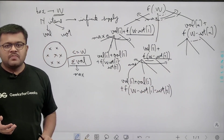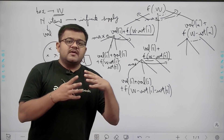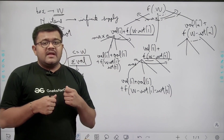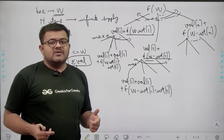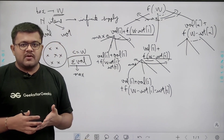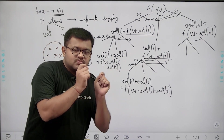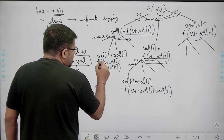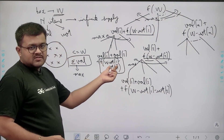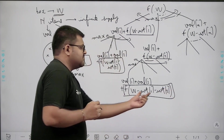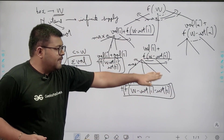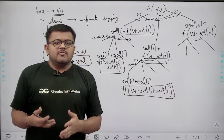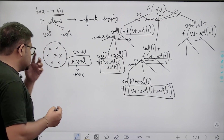This brute-force recursion takes exponential time. To reduce it to polynomial, we consider dynamic programming. We check the overlapping subproblems property — whether the same smaller subproblems are solved repeatedly. Indeed, for example f(W - weight[1] - weight[2]) appears in multiple branches of the recursion tree, confirming overlapping subproblems. So we can solve this using dynamic programming.